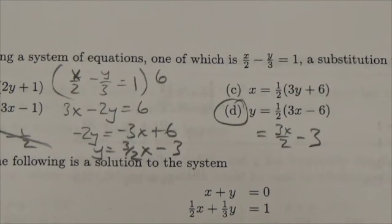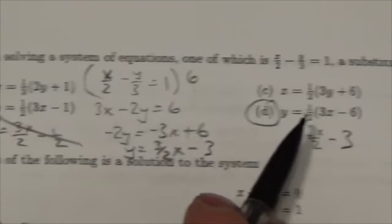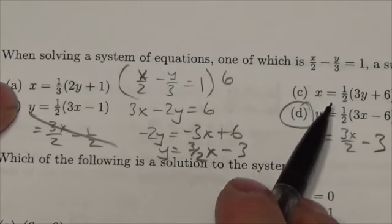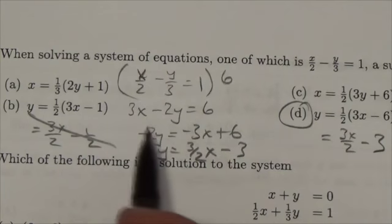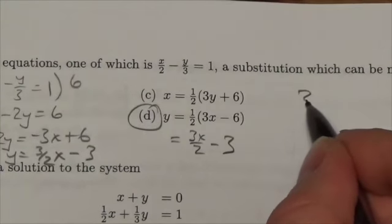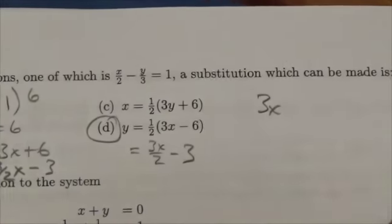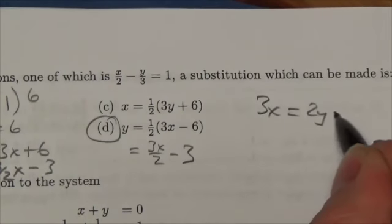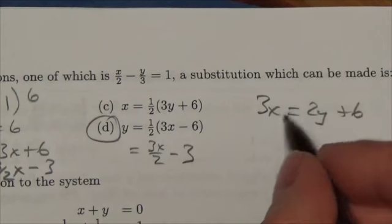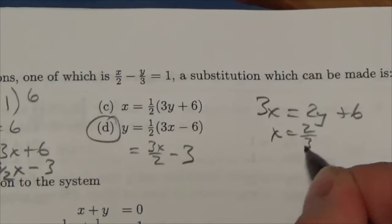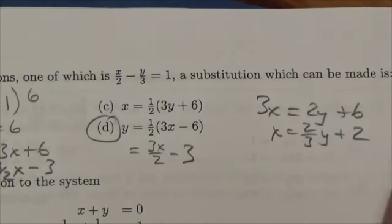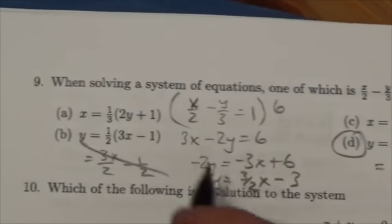Now, just to be clear that those other two aren't the correct values here, let's take a quick look and solve this thing for x. So, 3x, bring the 2y over, is going to equal 2y plus 6. Divide by 3, and I'll get x equals 2 thirds y plus 2.